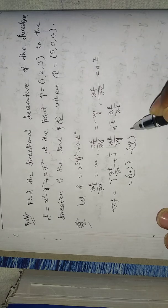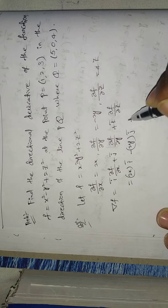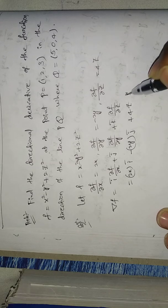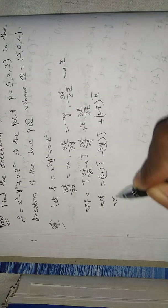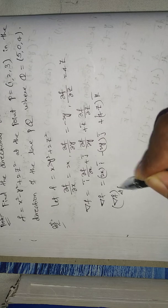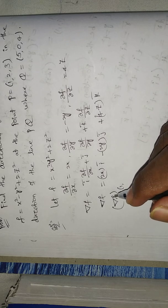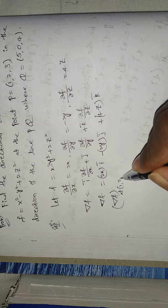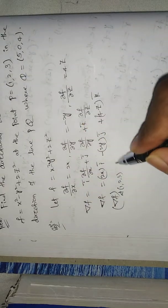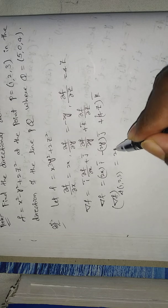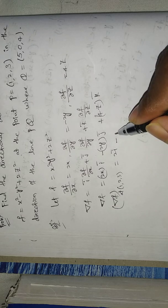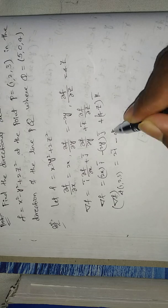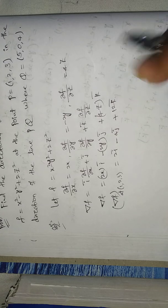So del f equals 2x i-bar minus 2y j-bar plus 4z k-bar. Evaluating del f at the point (1, 2, 3) gives 2i-bar minus 4j-bar plus 12k-bar.